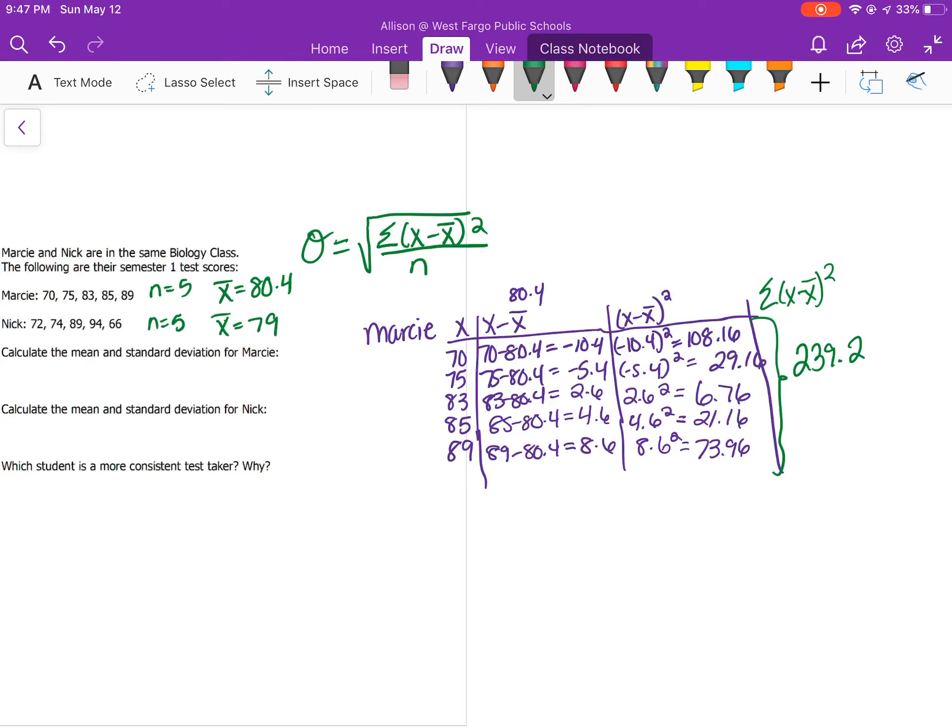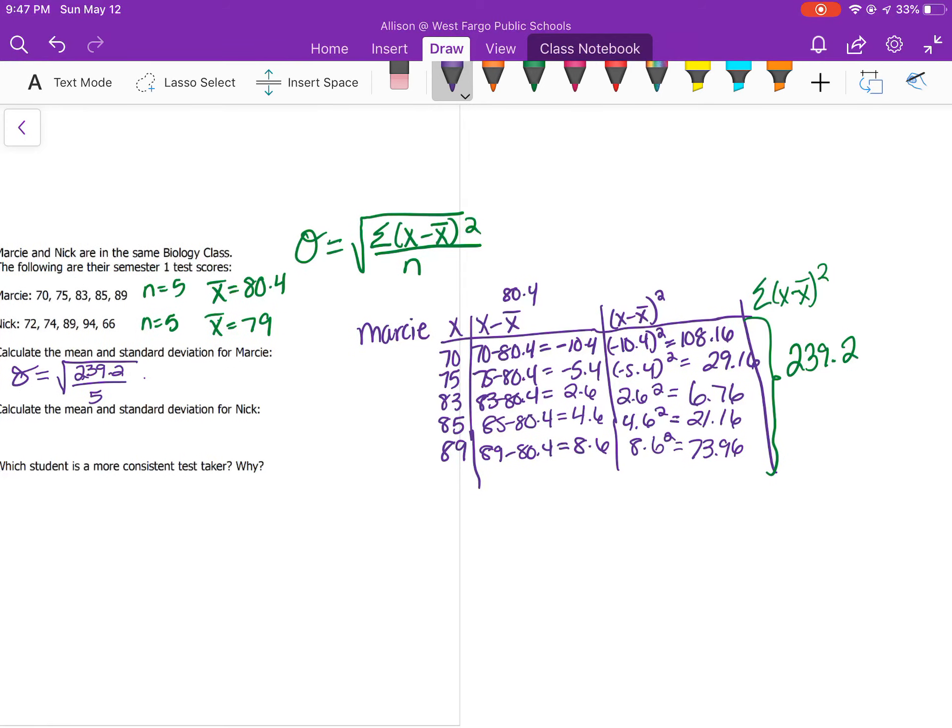I can plug that back into my formula now. The standard deviation will be the square root of that sum, 239.2, divided by n, which was 5. Figure out what's inside the square root first, divide the number by 5, and then take the square root. You should get 6.92 for Marcy.